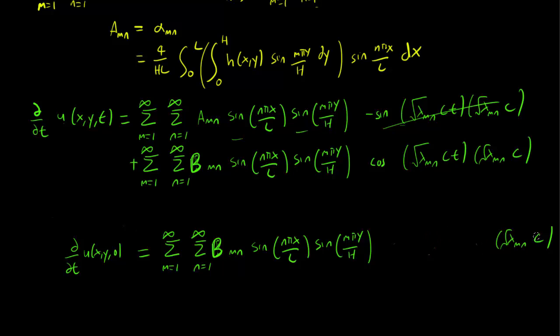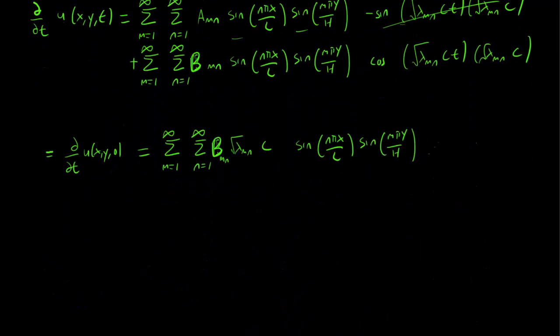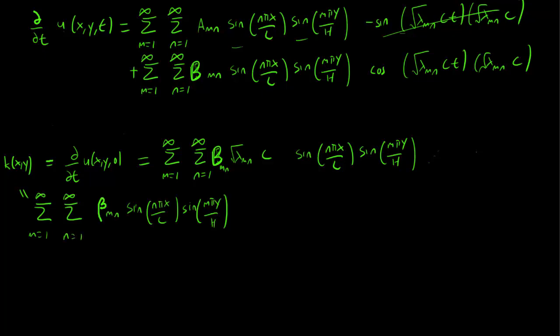We have to be mindful of the √λ_mn times c term. But the first derivative of u is equal to k by our second initial condition. So let's call this k. And this is going to be equal to its double Fourier sine series. So again, m equals 1 to infinity, n equals 1 to infinity, times the sin(nπx/l), sin(mπy/h), times beta_mn, the Fourier sine series of k. And we set this equal to our expression over here.